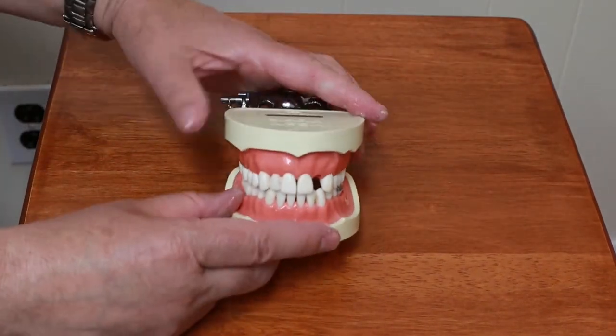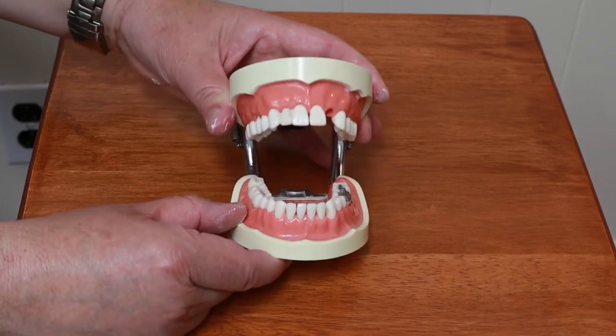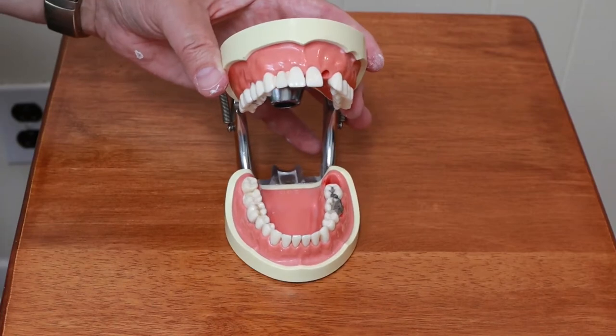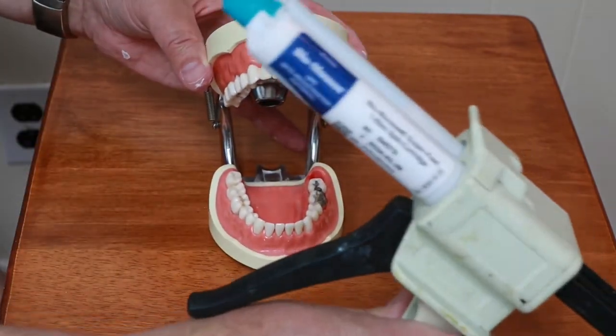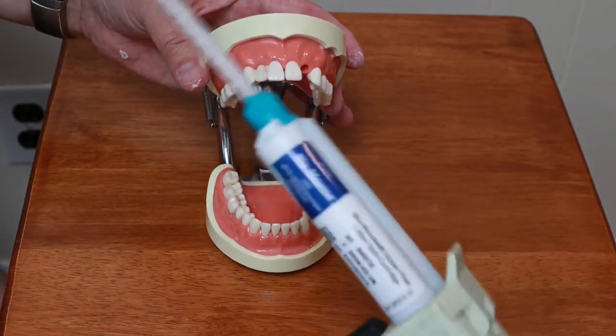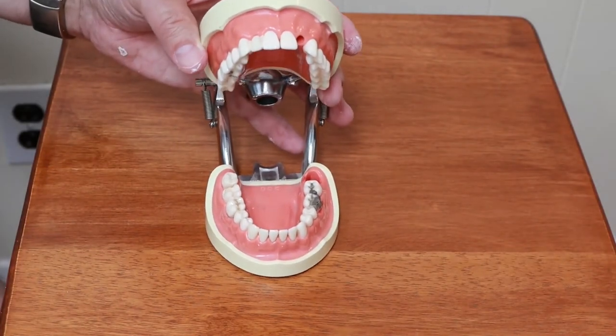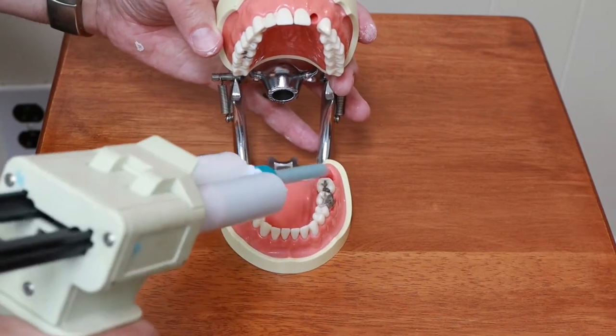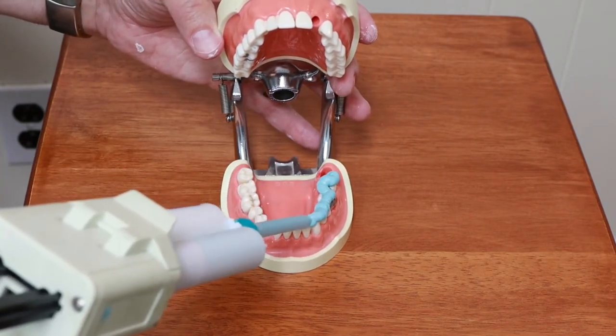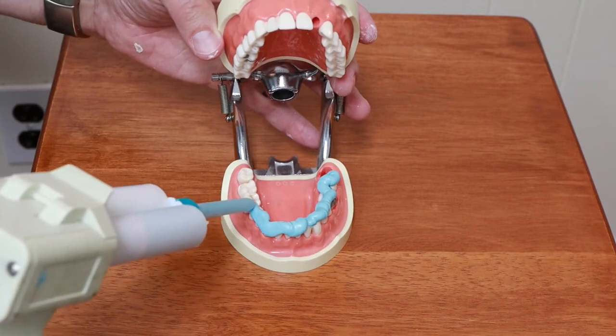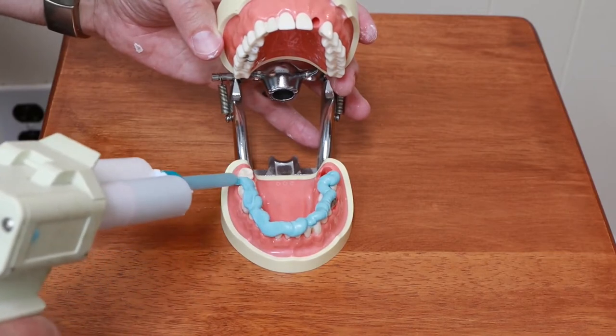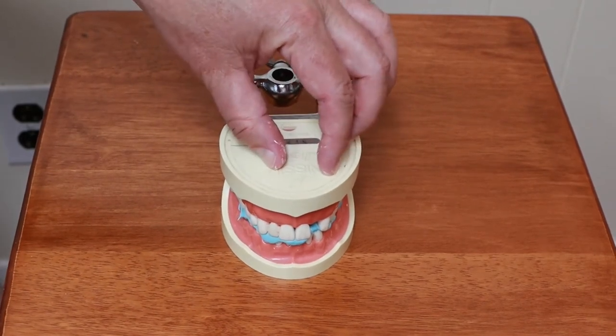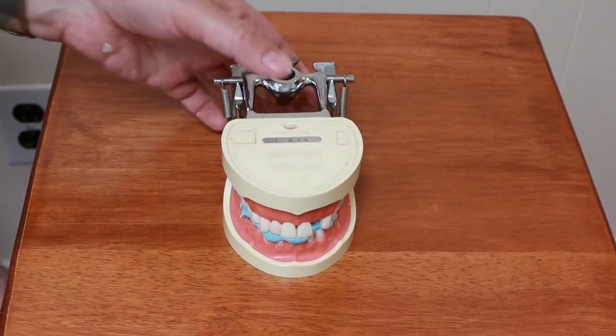Last thing that we got to do is take a bite registration. Basically I'm just going to squirt some material called blue mousse. It comes in the cartridge again. This is similar to that first impression material except it's a lot stiffer. I just run a bead of the blue mousse across the biting surfaces of all the teeth. And then we just have Buster close down, bite down into it. The blue mousse takes about a minute to set.